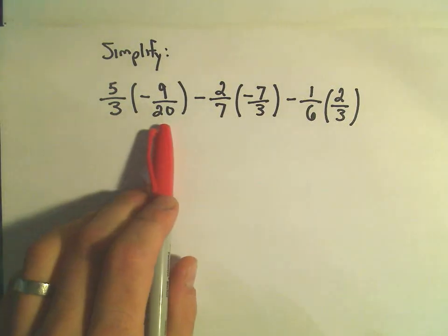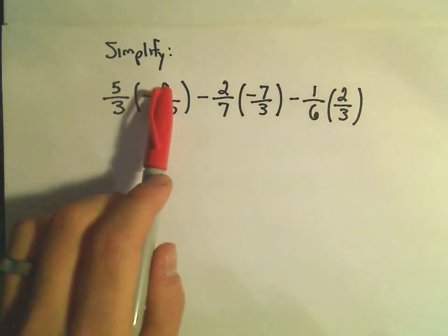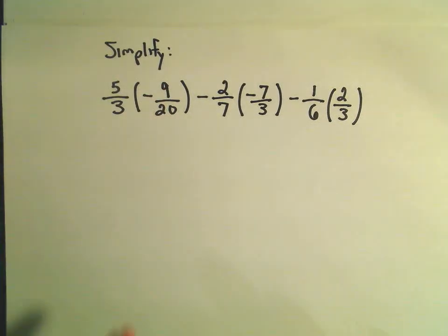So on the first part, we have 5 thirds times negative 9 over 20, and we could immediately just multiply across the top and across the bottom. We'd have a positive times a negative and that would give us a negative, but then we would have to reduce that. So I think it's personally easier to reduce at the beginning.